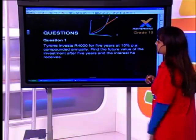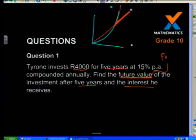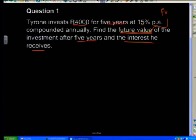First example: they tell us that Tyrone invests 4,000 Rand for five years at 15% per annum compounded annually. They say find the future value — that's another way to say accumulated amount. Find the future value of the investment after five years and the interest that he receives. So they're asking you two things: the accumulated amount, and then the interest that he receives.